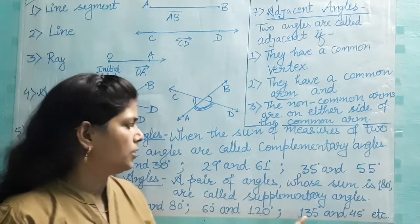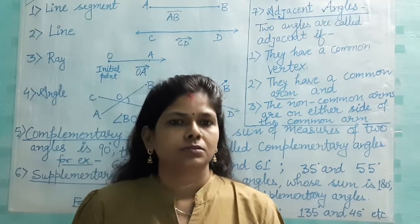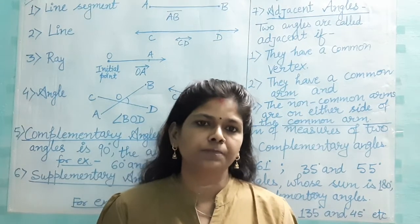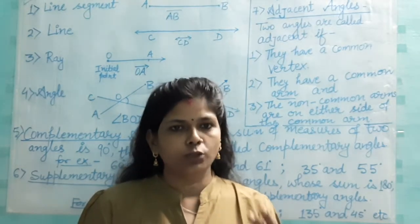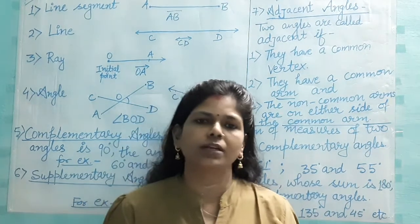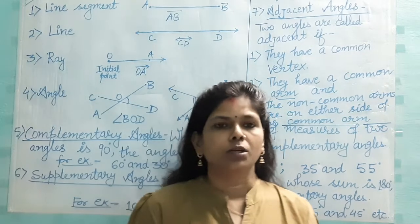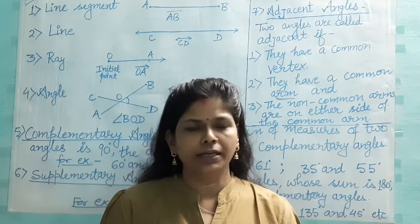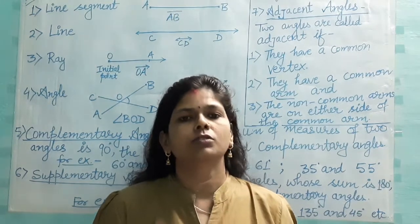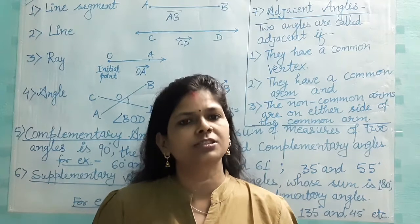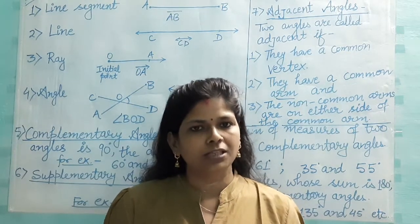60° and 120°, and 135° and 45° are also supplementary angles. Can two acute angles be supplementary? No, because an acute angle measures less than 90°. If we take 89° as the maximum acute angle, then 89° + 89° is still less than 180°, so two acute angles cannot be supplementary. Can two obtuse angles be supplementary? No, because one obtuse angle is greater than 90°. If we take 91°, then 91° + 91° gives a sum greater than 180°, so two obtuse angles cannot be supplementary. Can two right angles be supplementary? Yes — 90° + 90° = 180°, so two right angles can be supplementary.